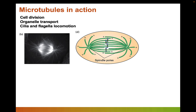During cell division, centrosomes are duplicated. This eventually helps physically separate and pull apart the chromosomes, because each microtubule organizing center will have microtubules originating from it. Some of those microtubules make contact with chromosomes and begin to pull them back toward what will eventually become a daughter cell.